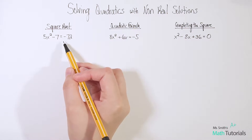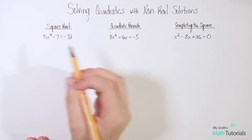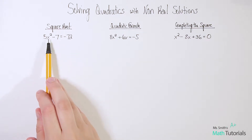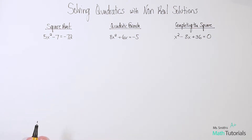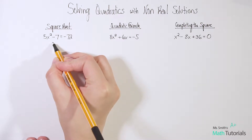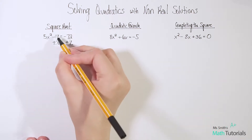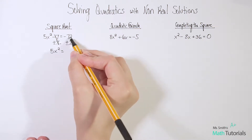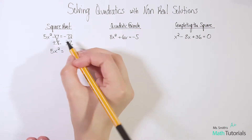Let's get started. We're going to solve this one using the square root method. Remember, with the square root method, we want to get our x squared completely alone on one side of the equation. Notice that our b is 0, so the square root method is going to be a great method to use. So let's get my x squared alone. The first thing I'd want to do is add 7 to both sides. When I do that, it cancels out here, and I've got 5x² equals negative 72 plus 7, which gives me negative 65.